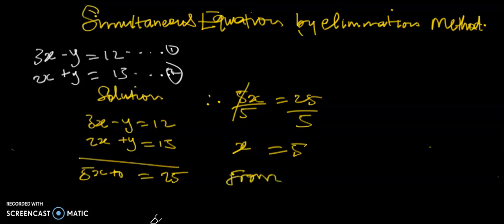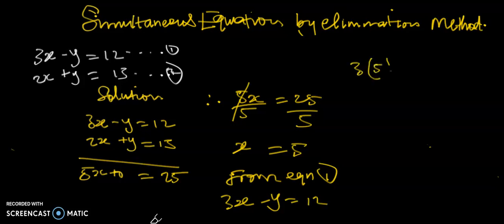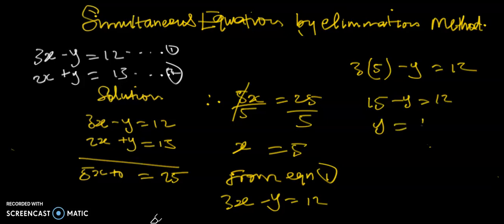Now we need to find the value for y using any of the equations. Let's use equation 1: 3x minus y equals 12. Substituting x equals 5, we have 3 times 5 minus y equals 12, so 15 minus y equals 12. Therefore y equals 12 minus 15, which is negative 3.